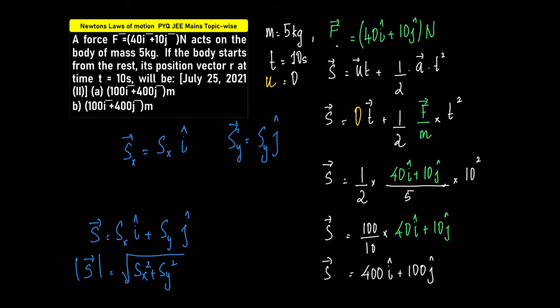What is F given to us is 40i plus 10j. This becomes 40i plus 10j divided by M. M is 5 kg. It is 5. 2 into 5 is 10. 10 t square at the time t is equal to 10 seconds.